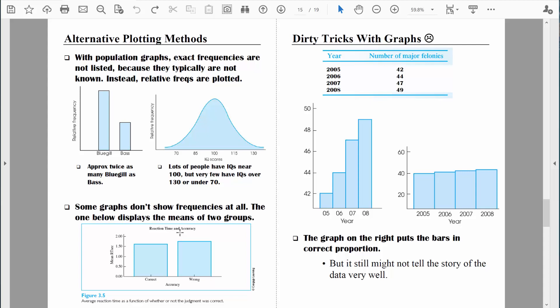And in all the examples that we've talked about so far, whether we were plotting frequencies, relative frequencies, or in this case means, we were always trying to plot the data in the most unbiased way possible.